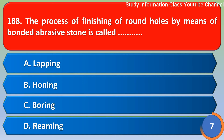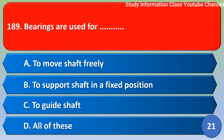Next question: the process of finishing of round holes by means of bonded abrasive stone is called — option B, that is honing. The correct answer is option B — honing.